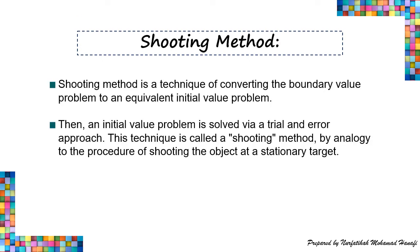The method we will use to solve the second order ODE with a boundary value problem is the shooting method. The shooting method is a technique of converting the boundary value problem, or BVP, to an equivalent initial value problem, IVP. Then the initial value problem is solved via a trial and error approach. This technique is called a shooting method by analogy to shooting an object at a stationary target.